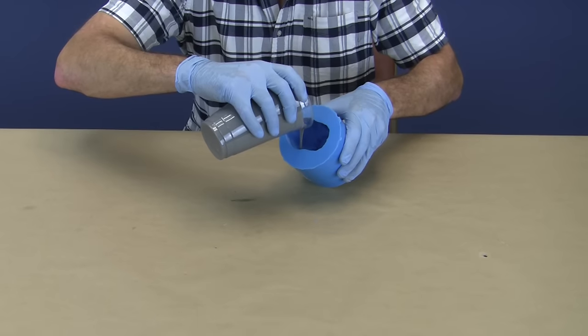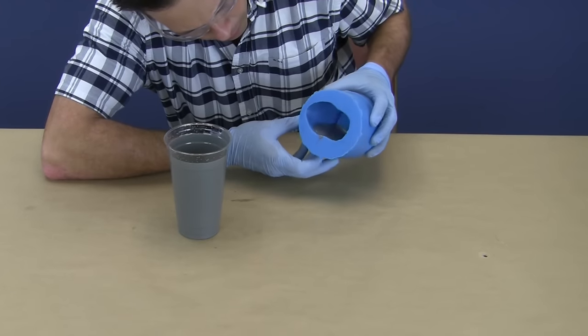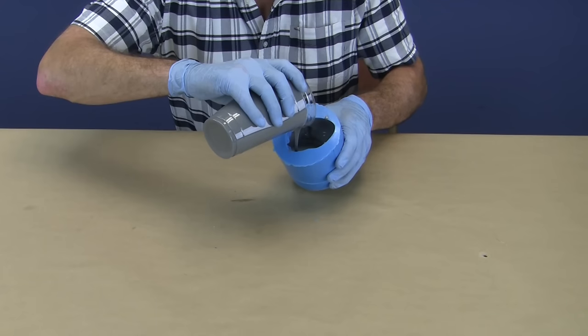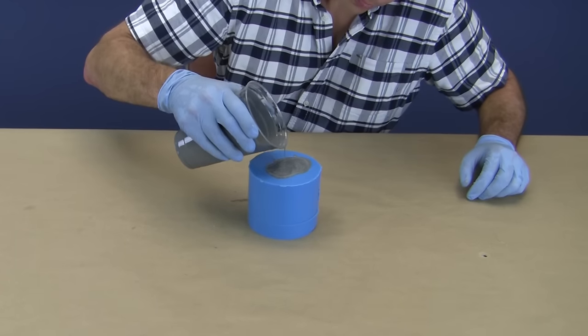A small amount of polyurethane is poured into the mold and rolled into the ears and undercuts to help prevent large air pockets. Then, the mold is filled to the top and allowed to cure.